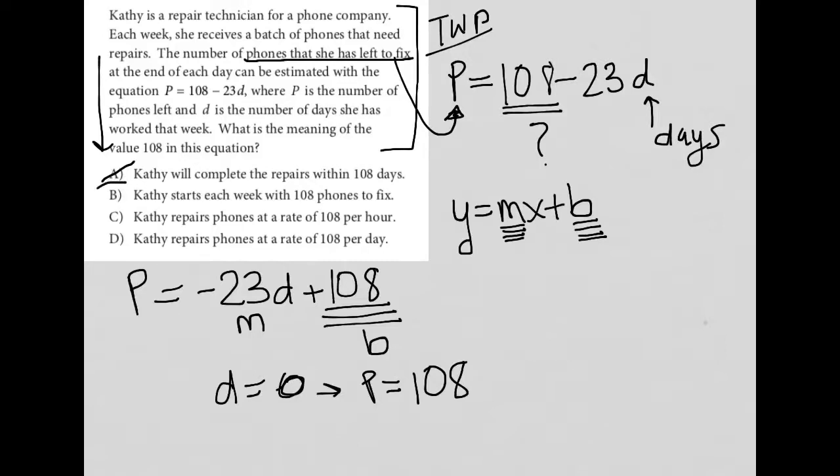Choice C brings in 108 per hour. There's no mentioning of hours in this question. And again, choice D, really the trick here is that it says rate of 108 per day. That's more so, if you see the term rate, which we see in choice C and D, those would more so be the right answer if the question was asking about the slope, because remember the slope is rate of change.